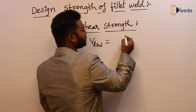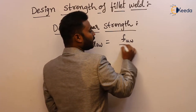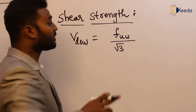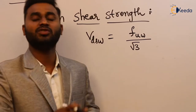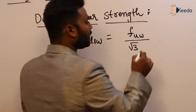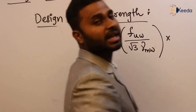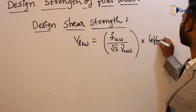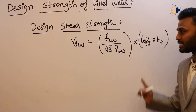So for weld, the stress we have to consider is F_U of the weld — ultimate stress of weld. The factor to be considered for shear is root 3, based on the distortion energy theory or shear strain energy theory discussed in a previous session. This stress is divided by gamma_MW, the factor of safety. The area resisting or transferring the shear is effective length into throat thickness. So this is the design shear strength of the weld.